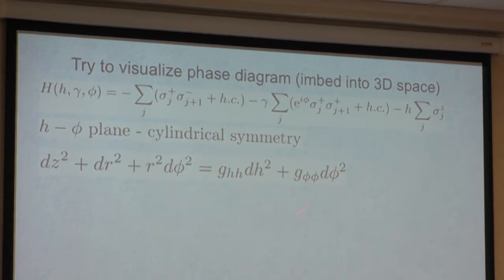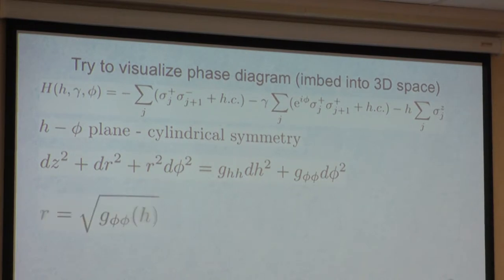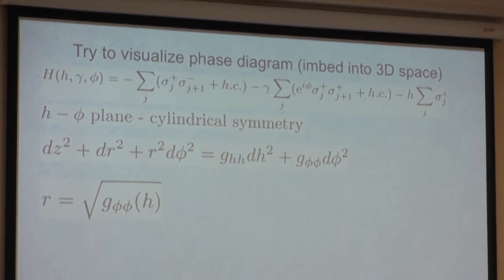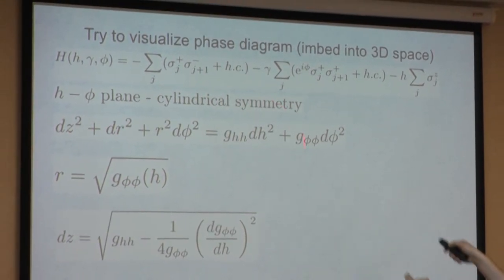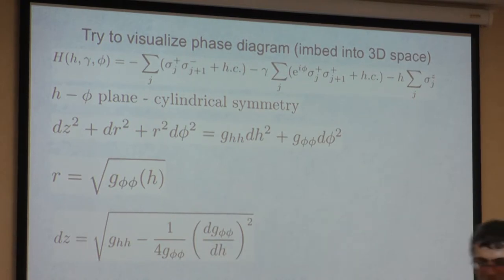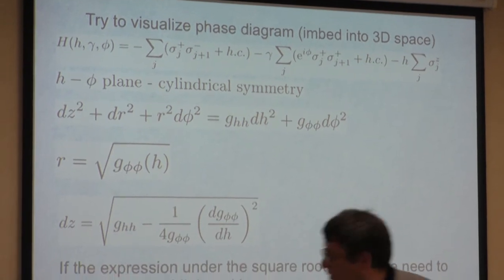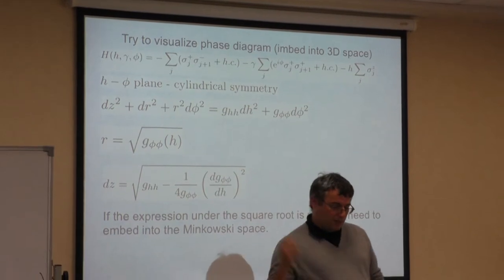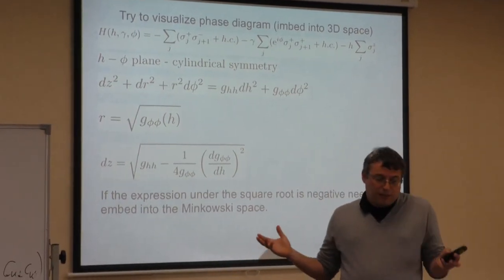You need to find functions Z and R such that the metric matches. It's a fairly unique procedure. Because we have cylindrical symmetry, it's natural to associate the phase phi with the cylindrical angle. After that, R must equal the square root of G_{phi,phi}—that's the radius of the surface. Plugging R in, I find Z from a differential equation: dZ/dH is determined, I integrate over H, and find Z. This gives a unique surface. In some cases the expression under the square root is negative, and then you cannot embed in Euclidean space but must use Minkowski space.